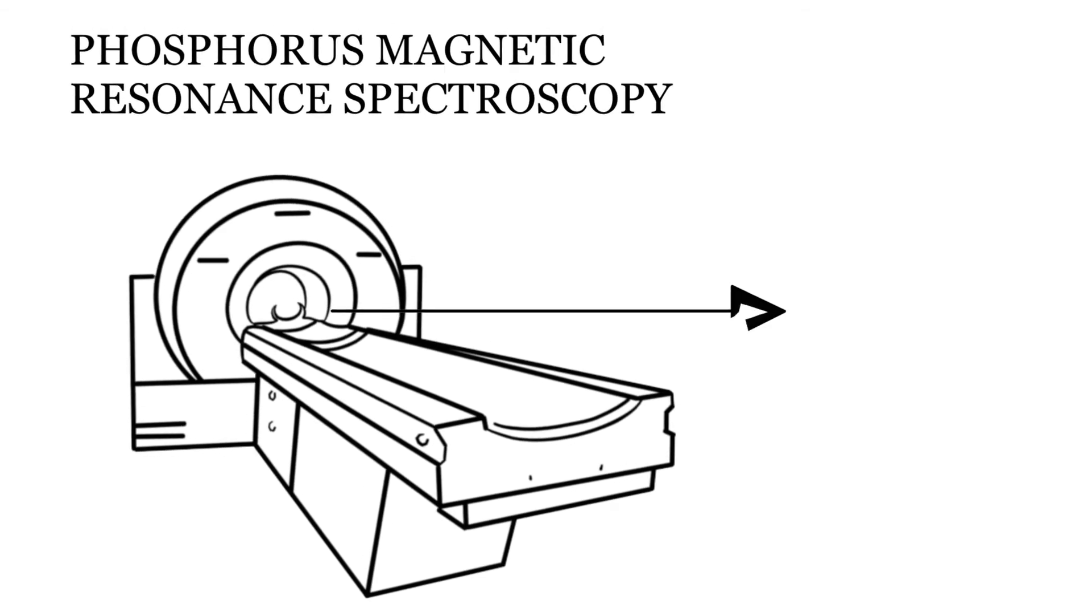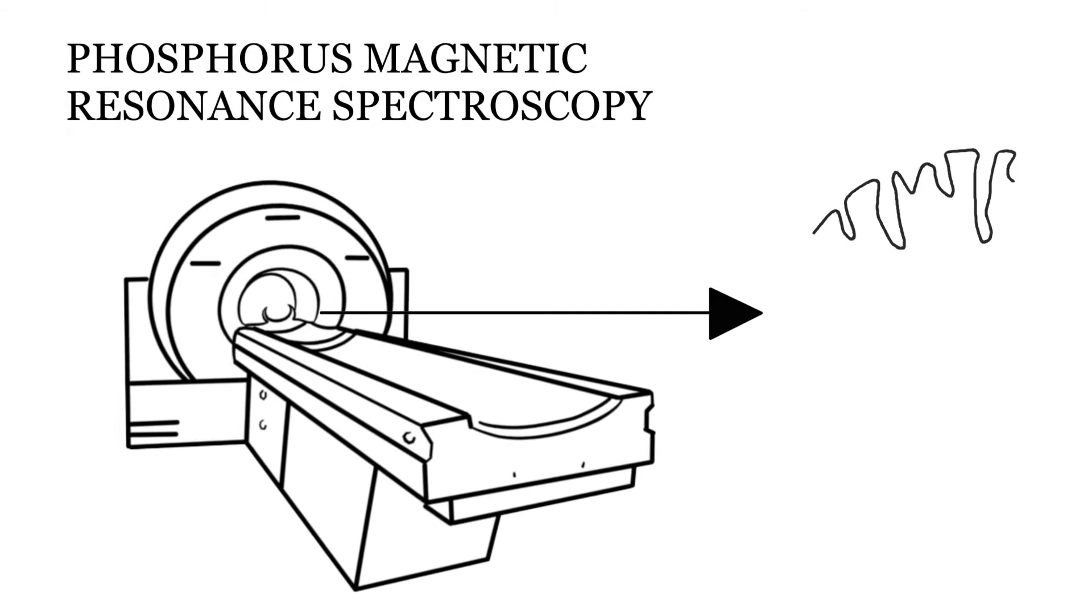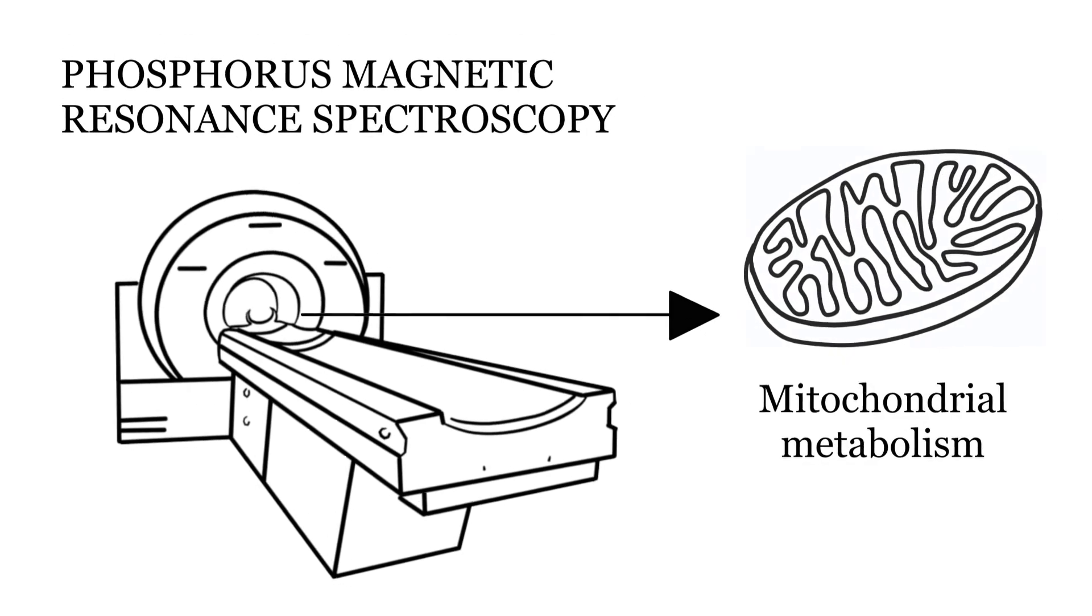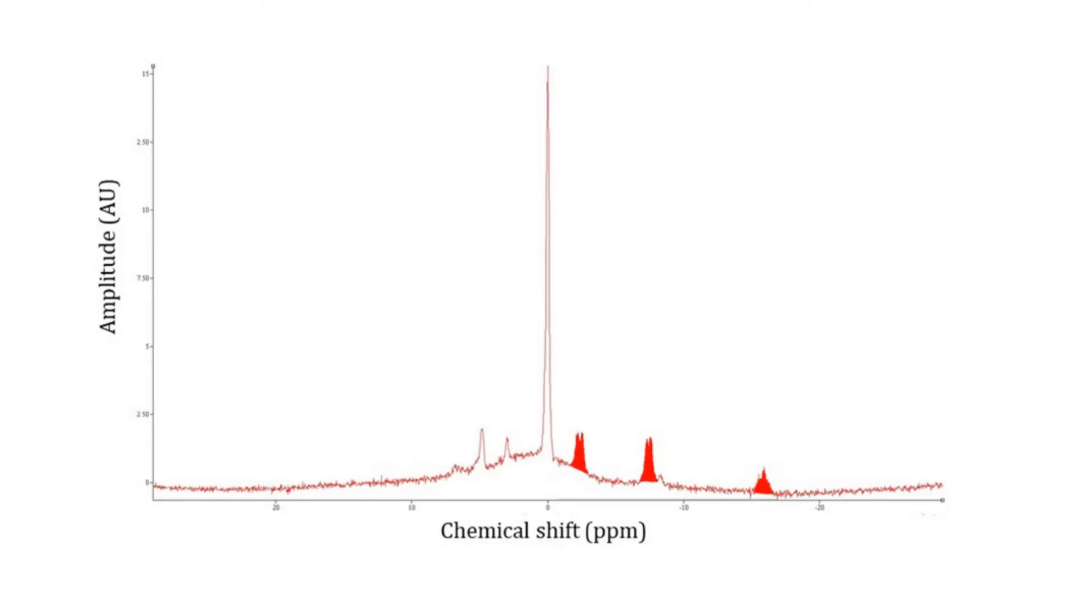Phosphorous magnetic resonance spectroscopy allows direct measurement of chemicals which are crucial to energy metabolism. Here you can see a typical muscle spectrum. There are three peaks on the right, which represent the alpha, beta and gamma phosphate of ATP, the energy currency of the cell.